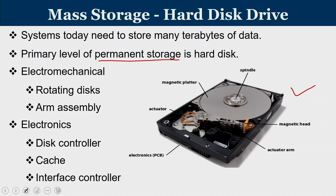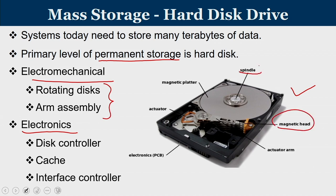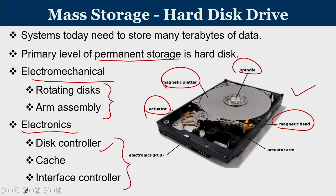For permanent storage devices like hard disks, we have an electromechanical component and an electronics component. The electromechanical component consists of a rotating disk arm assembly, including a magnetic head, a spindle that rotates, and a platter plus actuator. The electronics component consists of a controller, interface, and disk cache.